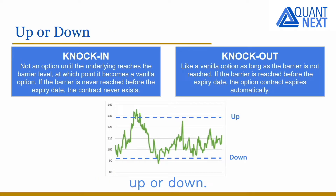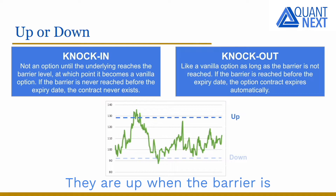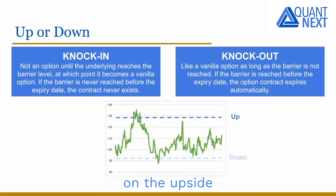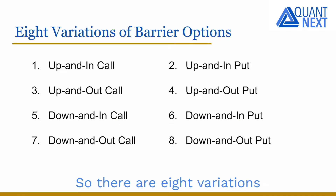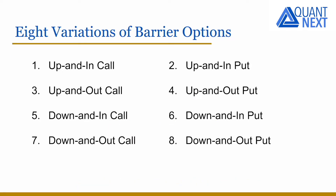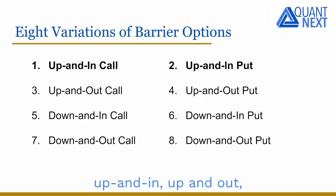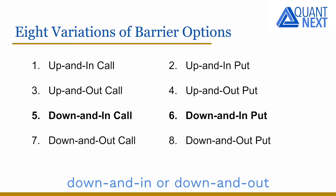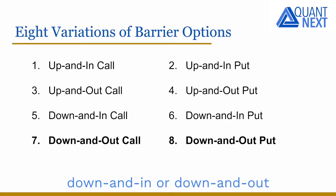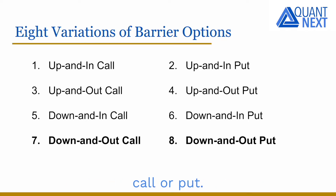Barrier options can be up or down. They are up when the barrier is on the upside, while they are down when the barrier is on the downside. So there are eight variations of barrier options: up and in, up and out, down and in, or down and out — as either a call or put.